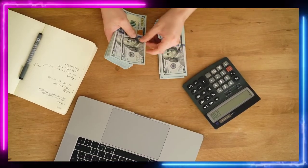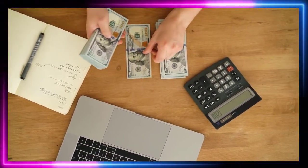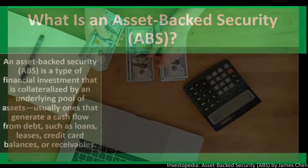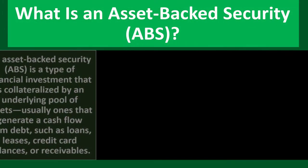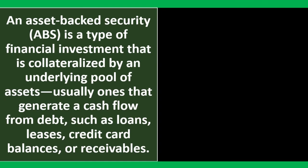In prior presentations we've been looking at investment goals, investment strategies, and investment tools. Keeping those in mind, we're now asking: what is an asset-backed security? An ABS is a type of financial investment that is collateralized by an underlying pool of assets, usually ones that generate a cash flow from debt — such as loans, leases, credit card balances, or receivables.